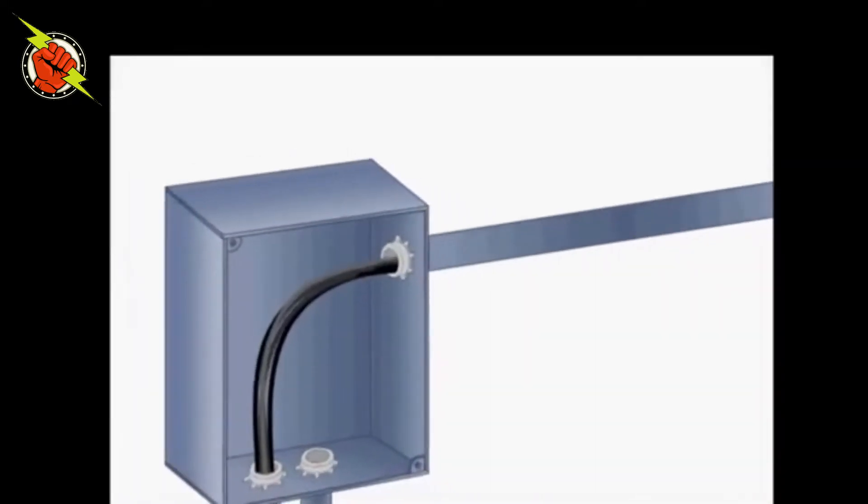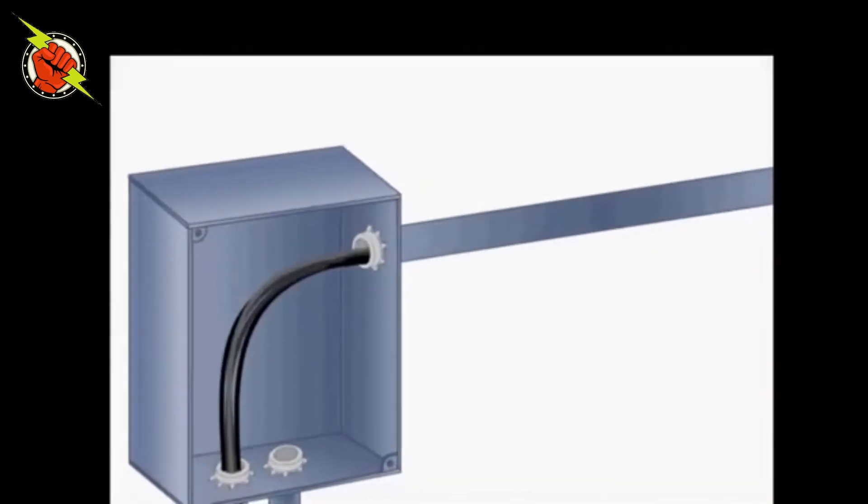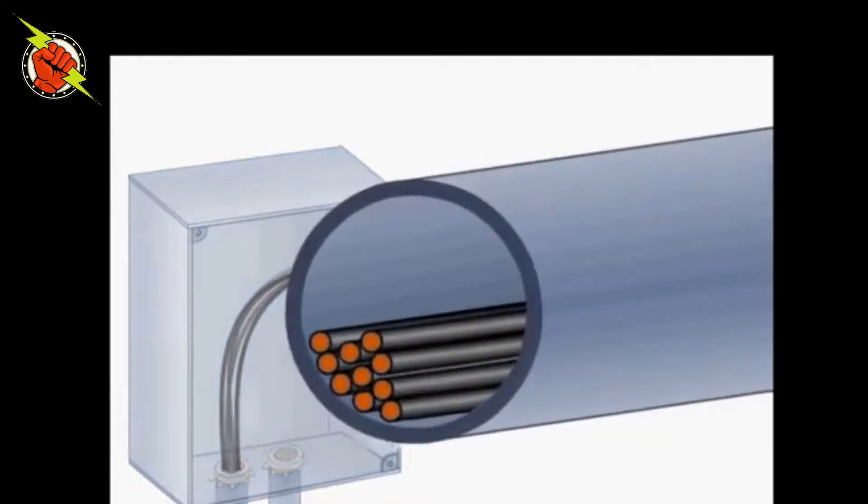It is a common practice for electricians to install additional conductors into a conduit raceway system that may already contain conductors. To determine the total number of conductors permitted in a conduit, apply the following steps.